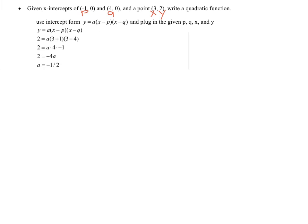Now we know a. That's all we needed because we had everything else. So y equals, and then we write in a, which is negative 1 half, and then x minus p, so x plus 1, and x minus q, x minus 4. Just be sure that y and x get to stay as variables, and then the a and the p and the q get to be the numbers that we know that they are now.